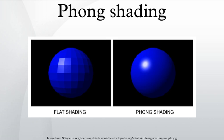Phong shading improves upon Gouraud shading and provides a better approximation of the shading of a smooth surface. Phong shading assumes a smoothly varying surface normal vector. The Phong interpolation method works better than Gouraud shading when applied to a reflection model that has small specular highlights, such as the Phong Reflection Model. The most serious problem with Gouraud shading occurs when specular highlights are found in the middle of a large polygon.